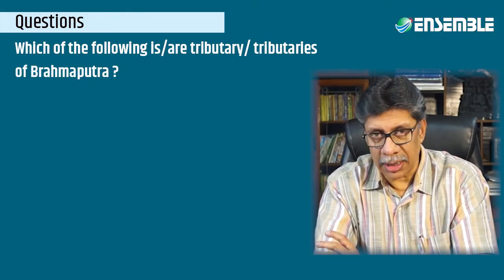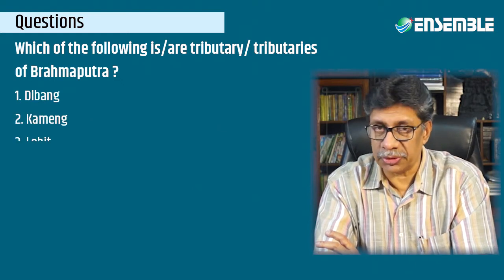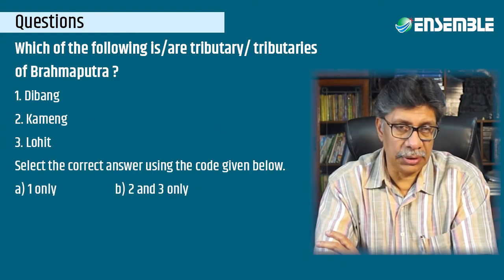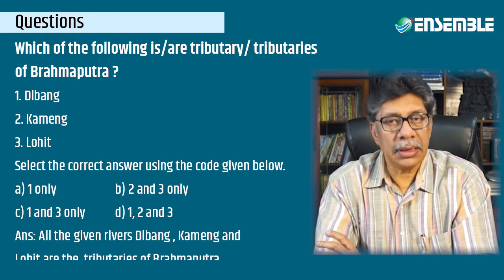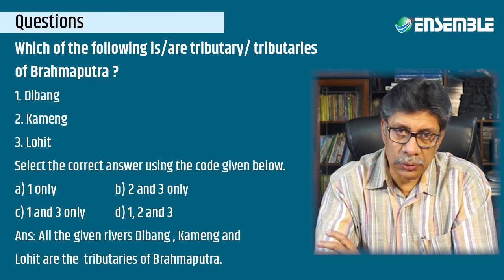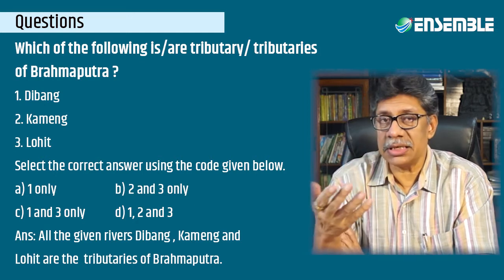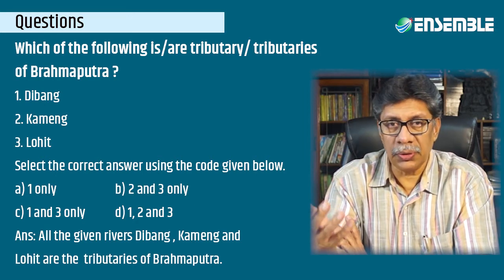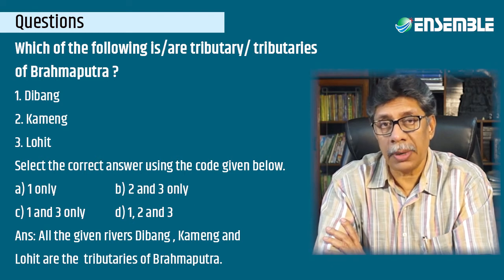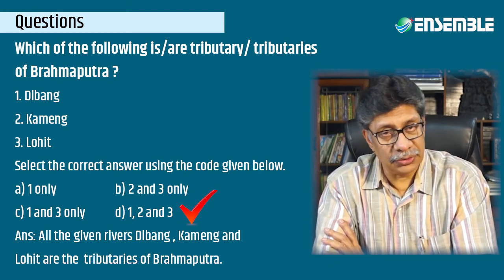The topic is also significant from the perspective of examination. One question asked was: which of the following are tributaries of Brahmaputra — Dibang, Kameng, and Lohit? Students were asked to select the correct answer using codes: one only, two and three, one and three, or one, two and three. The answer is that all three — Dibang, Lohit, and Kameng — are tributaries of Brahmaputra.